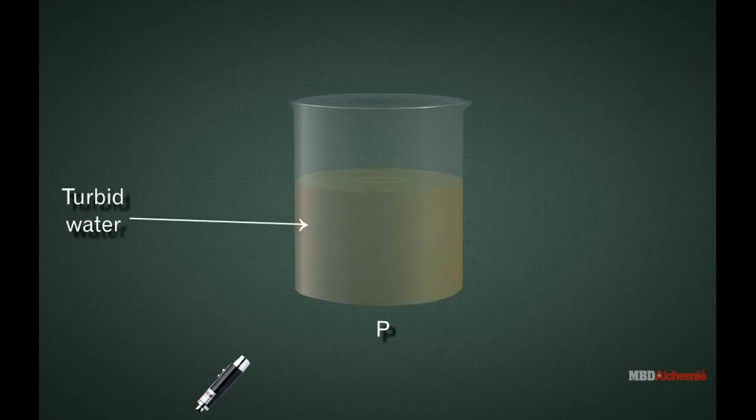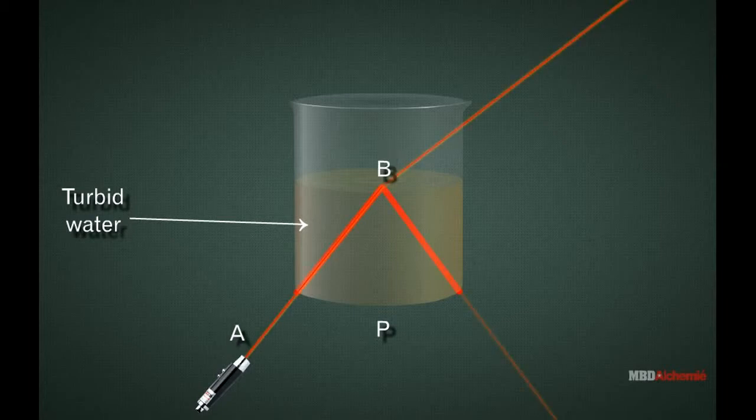On shining the laser light beam AB from below the glass beaker on the free surface of the turbid water, we observe that the laser light is partially reflected along BC in water and partially refracted along BD in air at the free surface of water or water-to-air medium interface XX in the glass beaker P.